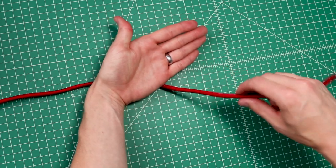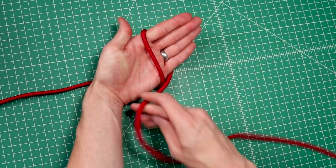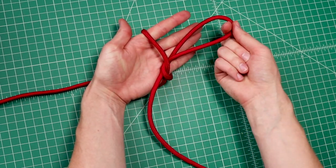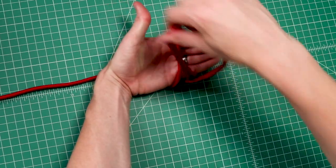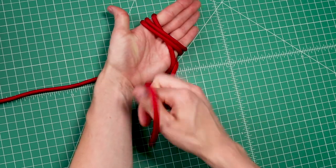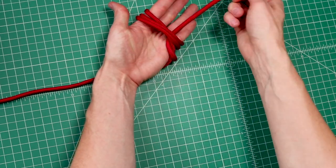For tying an overhand knot you'd go once around your hand and immediately underneath. With this barrel knot we're just doing an extra two passes and then that same underneath action.